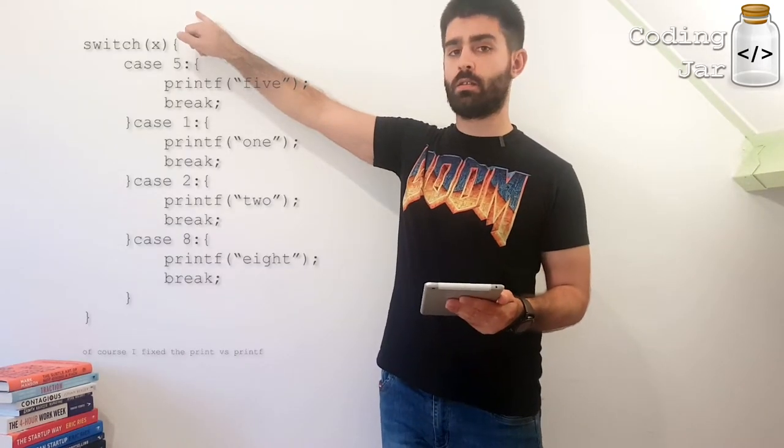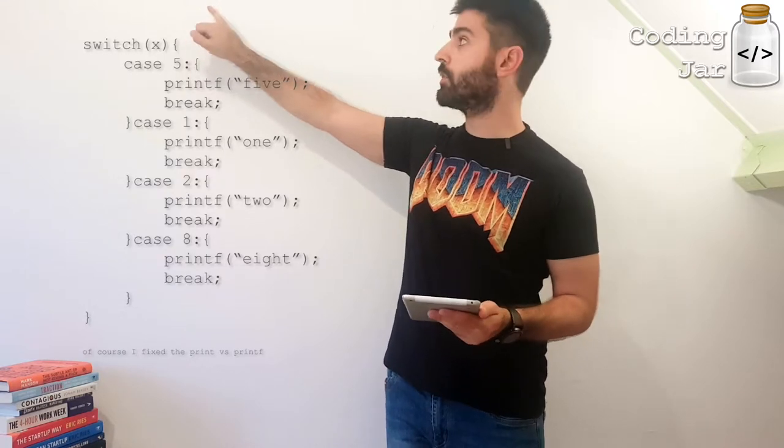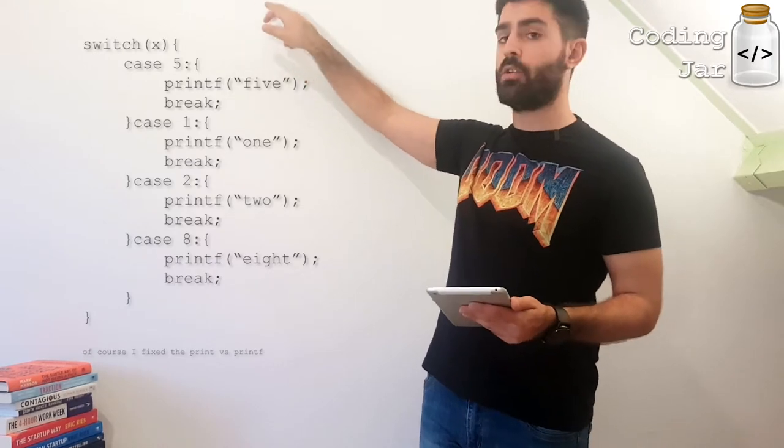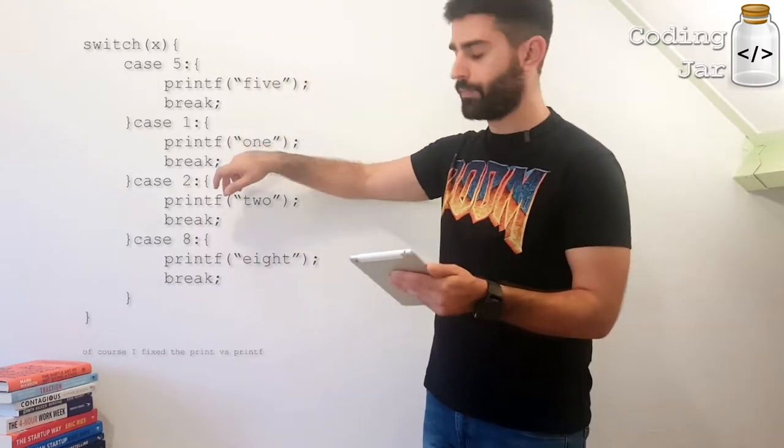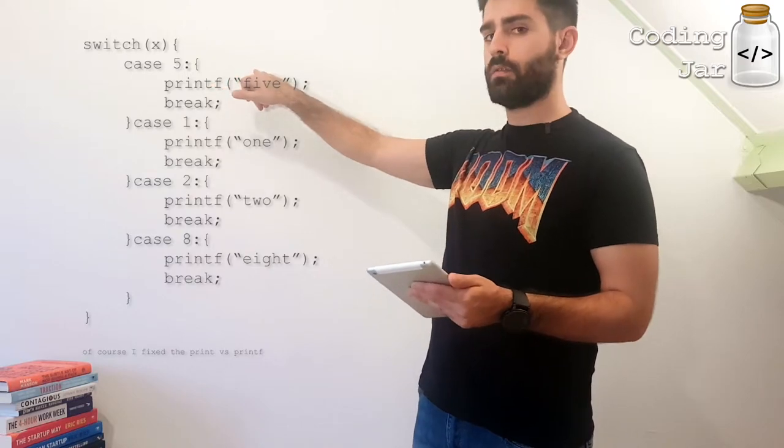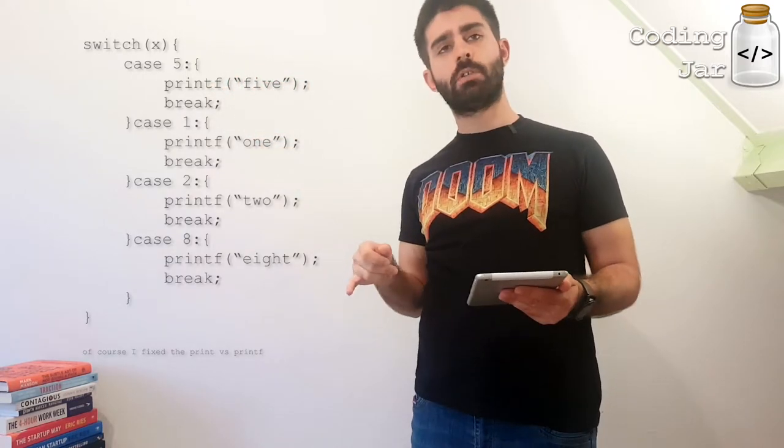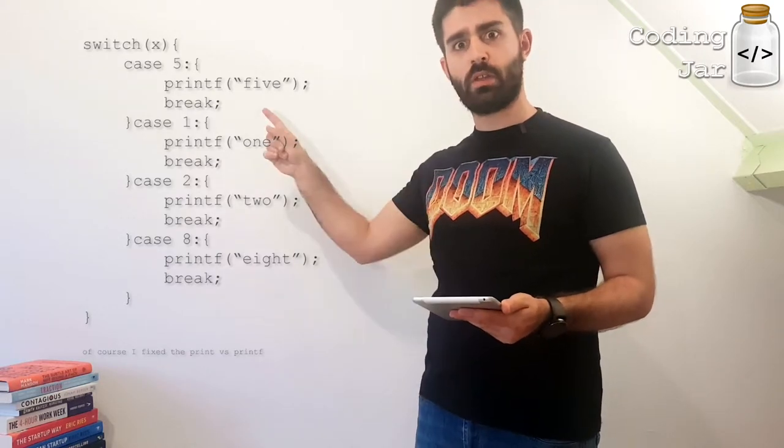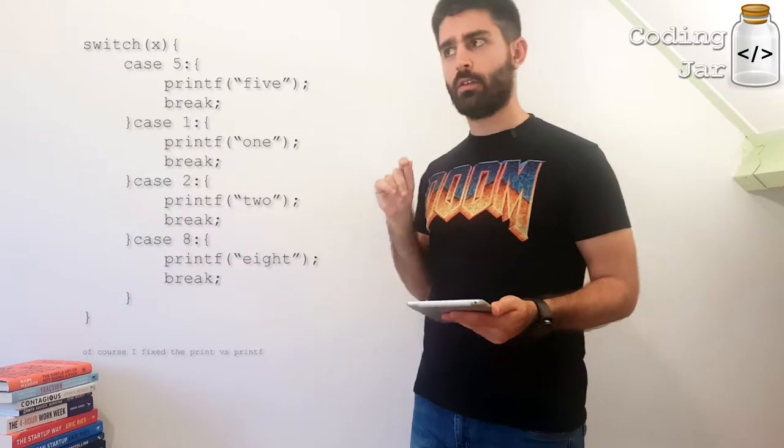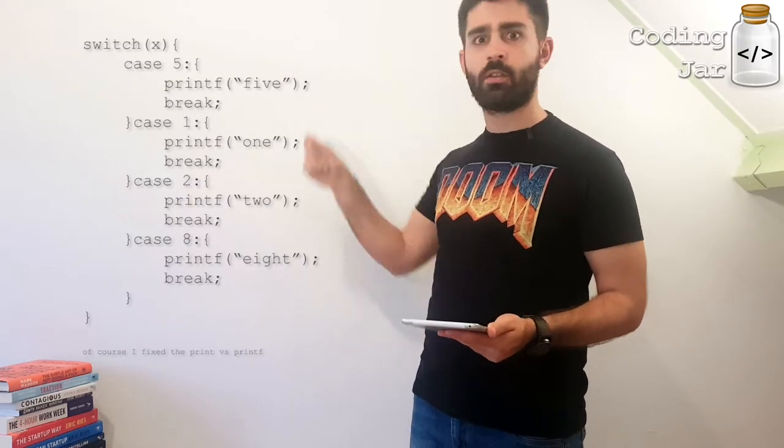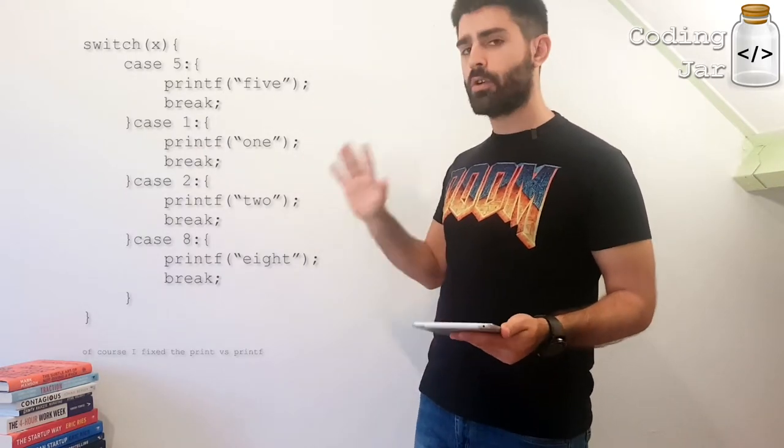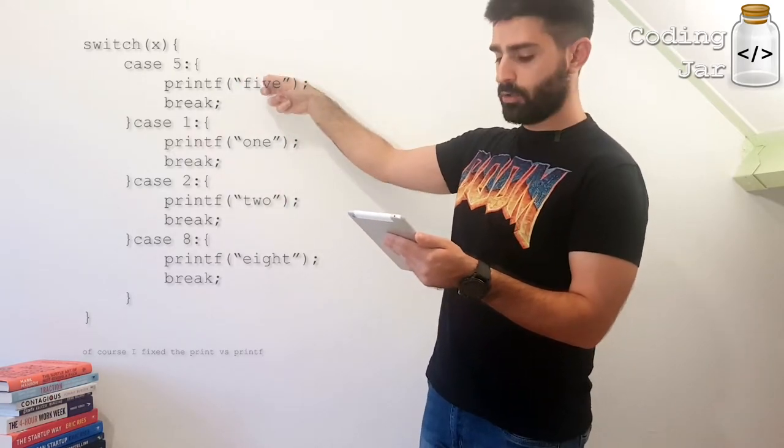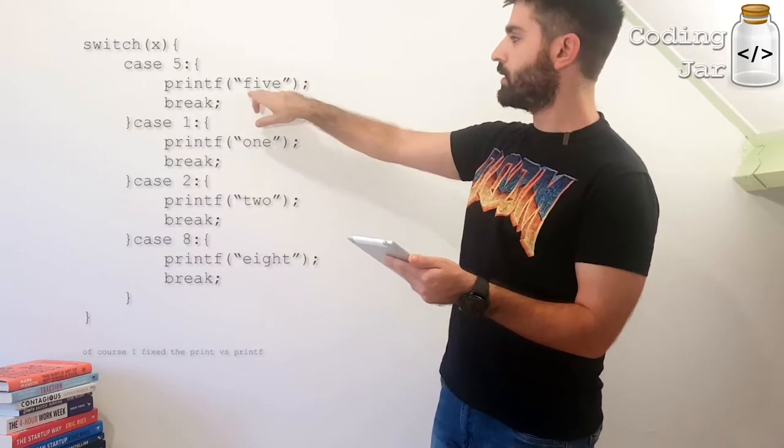We define a switch which will be controlled by variable x. So depending on the value of x, we execute the following block of code. Case 5. How do you say this? It's a colon. This should be the colon. I'm not sure. In Greek, we say it, anotikato telea, which means upper and lower dot. Let's go with colon.